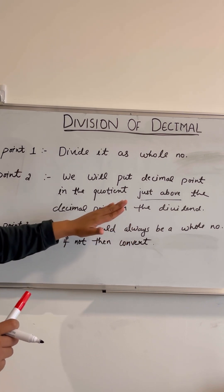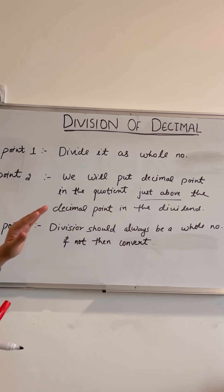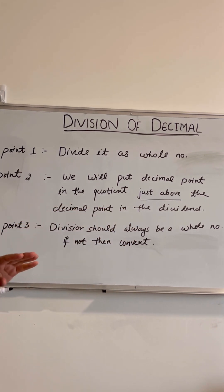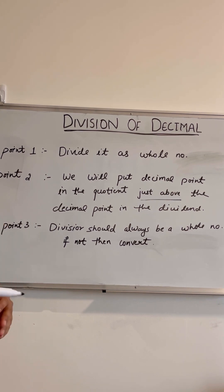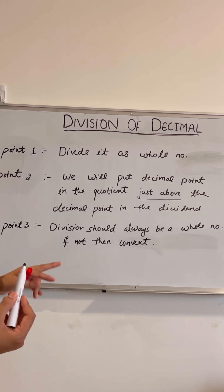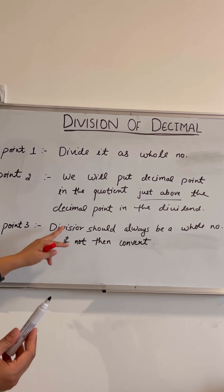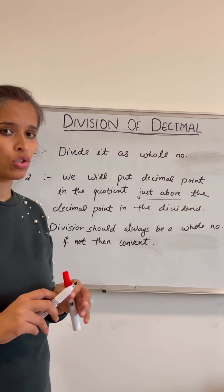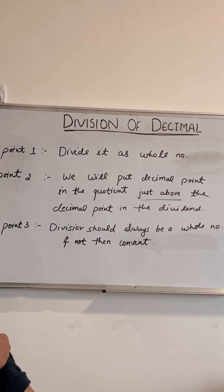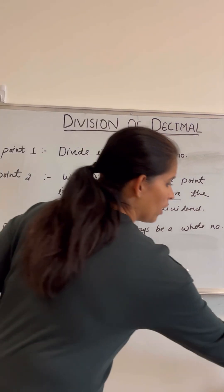The third point is: the divisor should always be a whole number. If it is not a whole number, we should convert it by multiplying by ten, hundred, or thousand. When we multiply, we multiply both the divisor and the dividend. Let's start with some examples and learn through them.